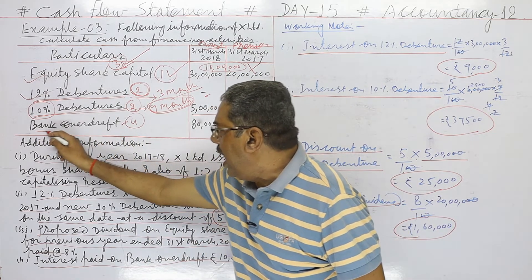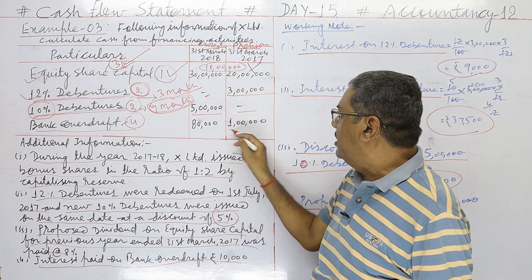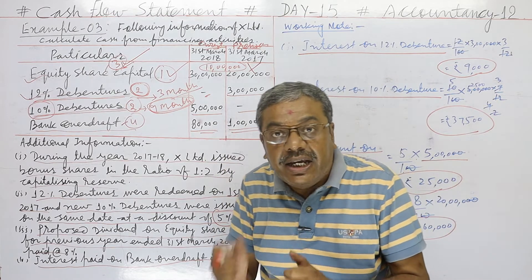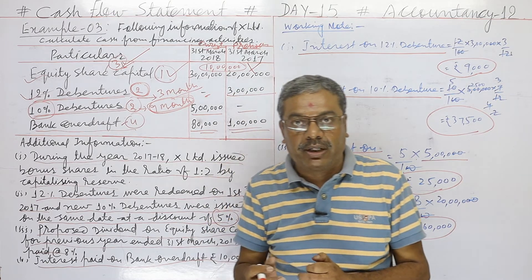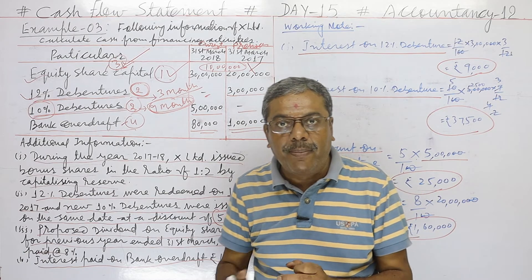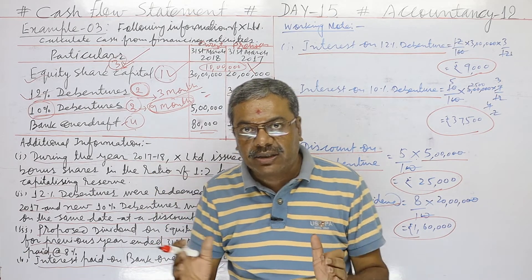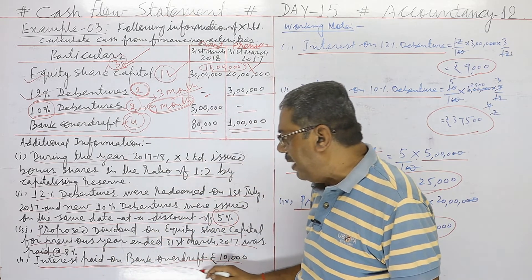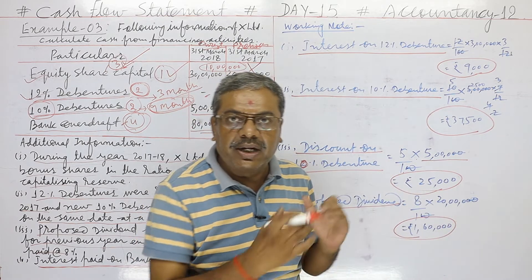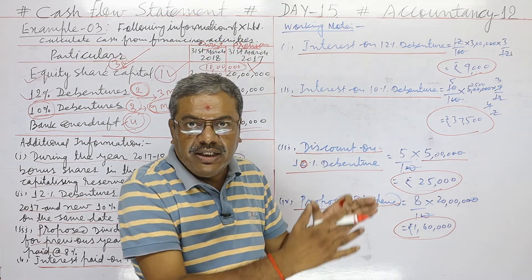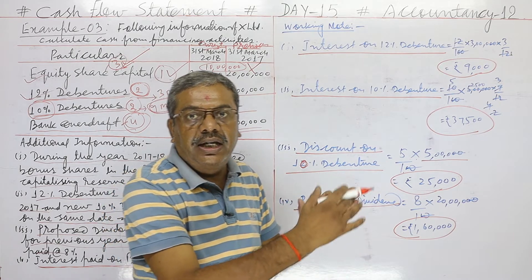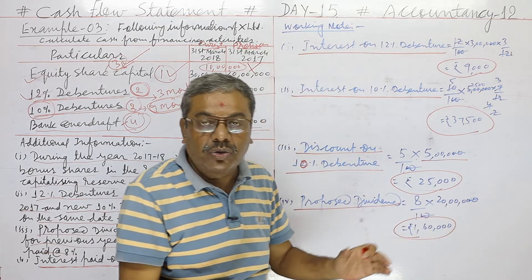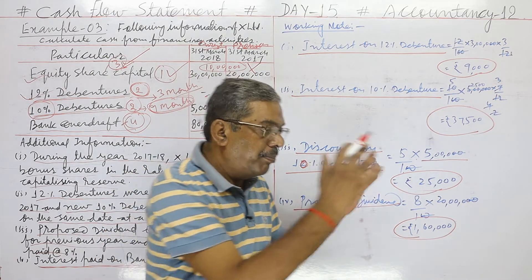For bank overdraft: initial value is ₹1 lakh, current value is ₹80,000 — a decrease of ₹20,000. This decrease in bank overdraft will be shown as a cash outflow. Additionally, interest paid on bank overdraft is ₹10,000 (from additional information 4).